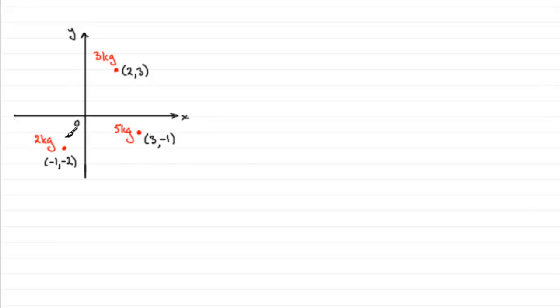Here it is. You can see we've got three particles, 2 kilograms, 3 kilograms, and 5 kilograms, situated at these points: (-1, -2), (2, 3), and (3, -1). So see if you can find the centre of mass of this system here. Come back when ready, and I'll run through the solution.